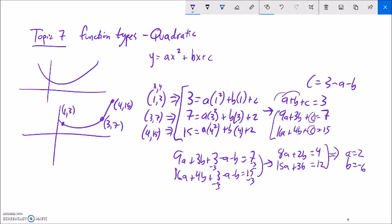And if I want to know c, I can plug them back into any of my equations. 2 plus negative 6 plus c is 3. It's going to get really loud here in a sec. Negative 4 plus c is 3. So c is 7. So my equation would be y is 2x squared minus 6 times x plus 7.